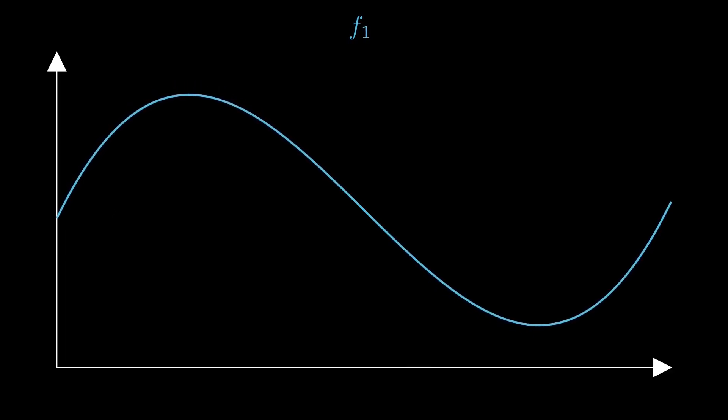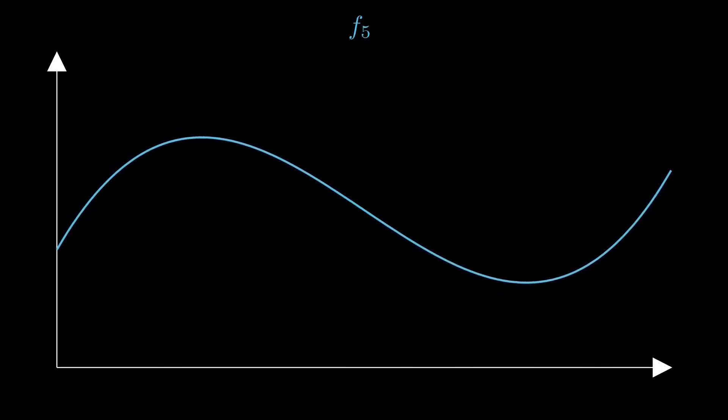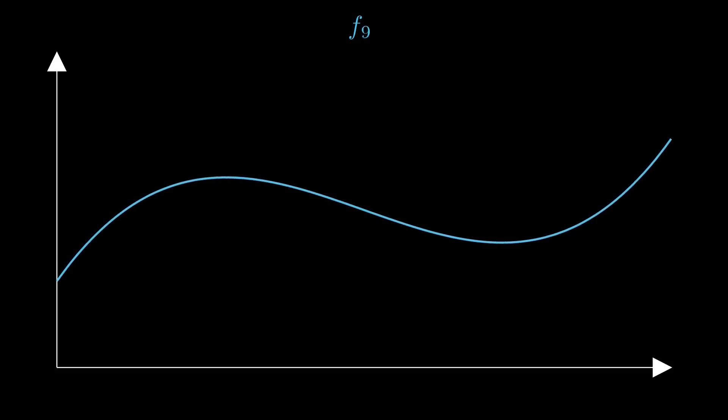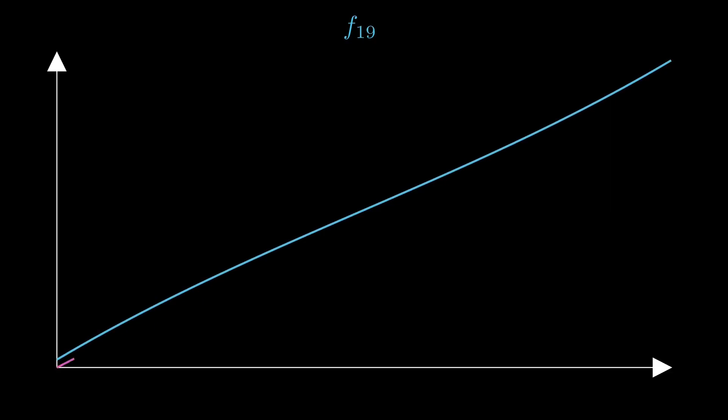So suppose we have a sequence of functions and let's plot them. We have f0 and f1 and f2 and so on. In this visual example we see that something very particular is happening. The graph approaches a certain shape, it somehow flattens out and it more and more takes the shape of a straight line. Then this straight line is also the graph of a function which we call f.